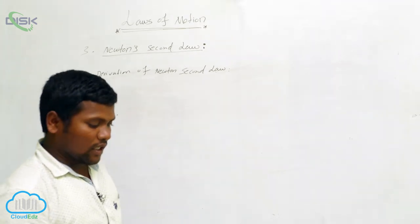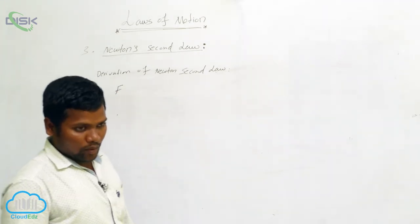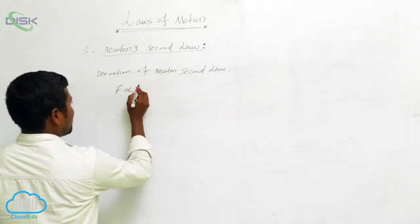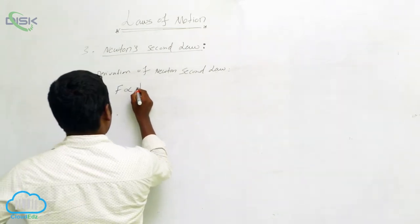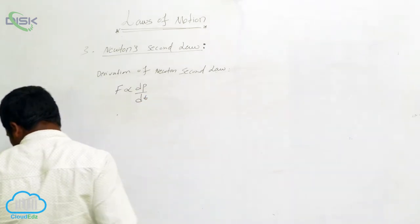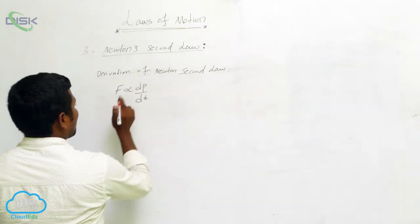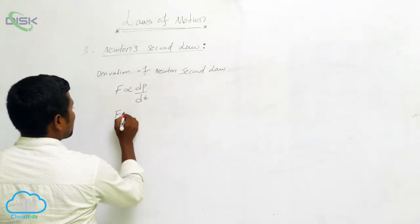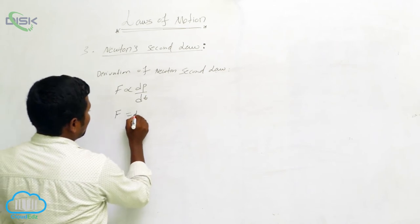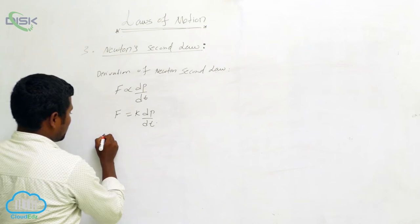The derivation of Newton's Second Law: the external force is directly proportional to the rate of change of momentum, so we can write F proportional to dp/dt. Removing the proportionality constant, we write F is equal to k into dp/dt, where k is a constant.